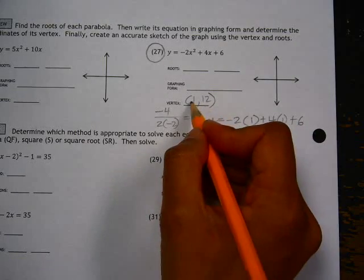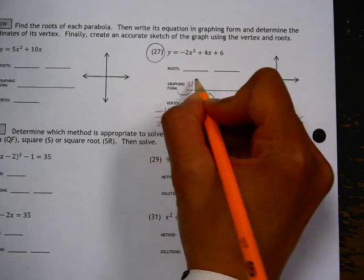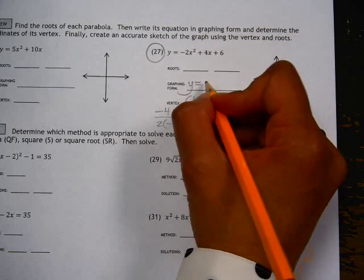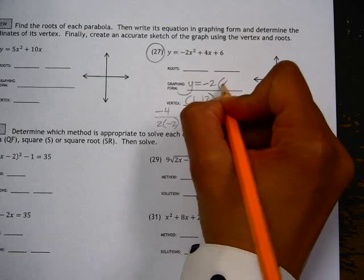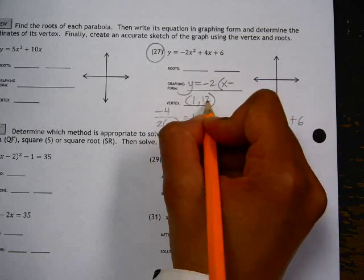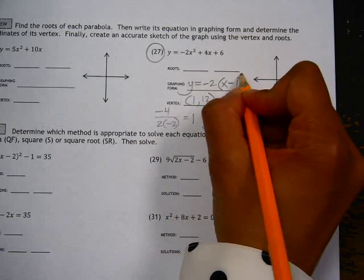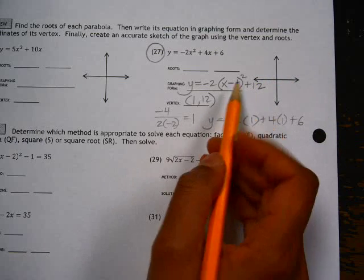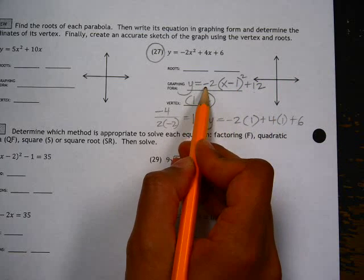So our vertex is at 1, 12, which will help us to find graphing form. Graphing form is a times x minus h squared plus k, so this is h and this is k, so x minus 1 squared plus 12. Vertex of 1, 12, a value of negative 2.